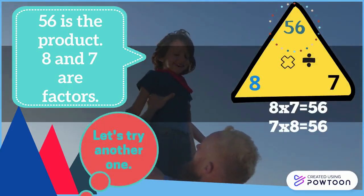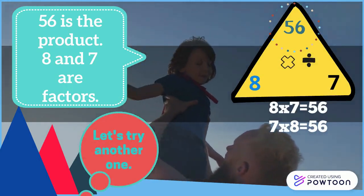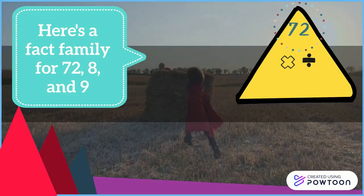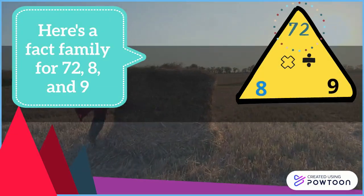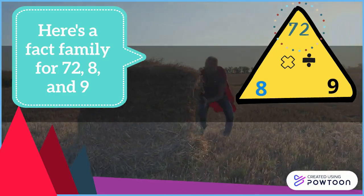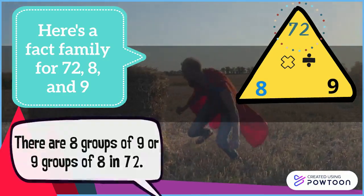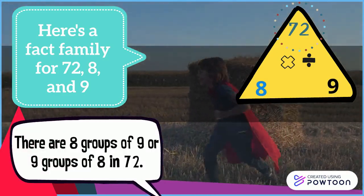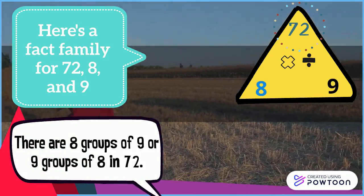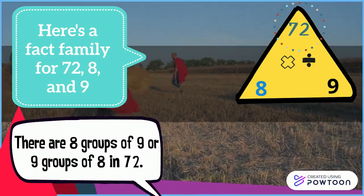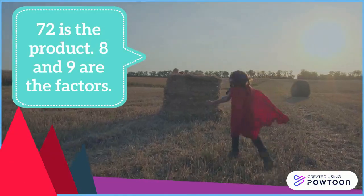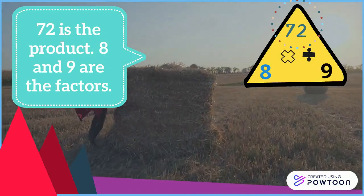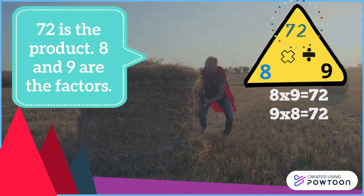Let's try another one. Here's a fact family for 72, 8, and 9. There are 8 groups of 9 or 9 groups of 8 in 72. 72 is the product. 8 and 9 are the factors.